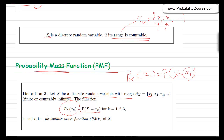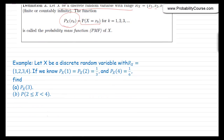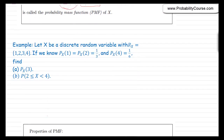Let's look at a simple example. Let x be a discrete random variable with range R_x = {1, 2, 3, 4}. We know px(1) = px(2) = 1/3, and px(4) = 1/6. The question is: what is px(3)? Also, we want to find the probability that x is greater than or equal to 2 and less than 4. I suggest you solve this before watching the rest of the video.